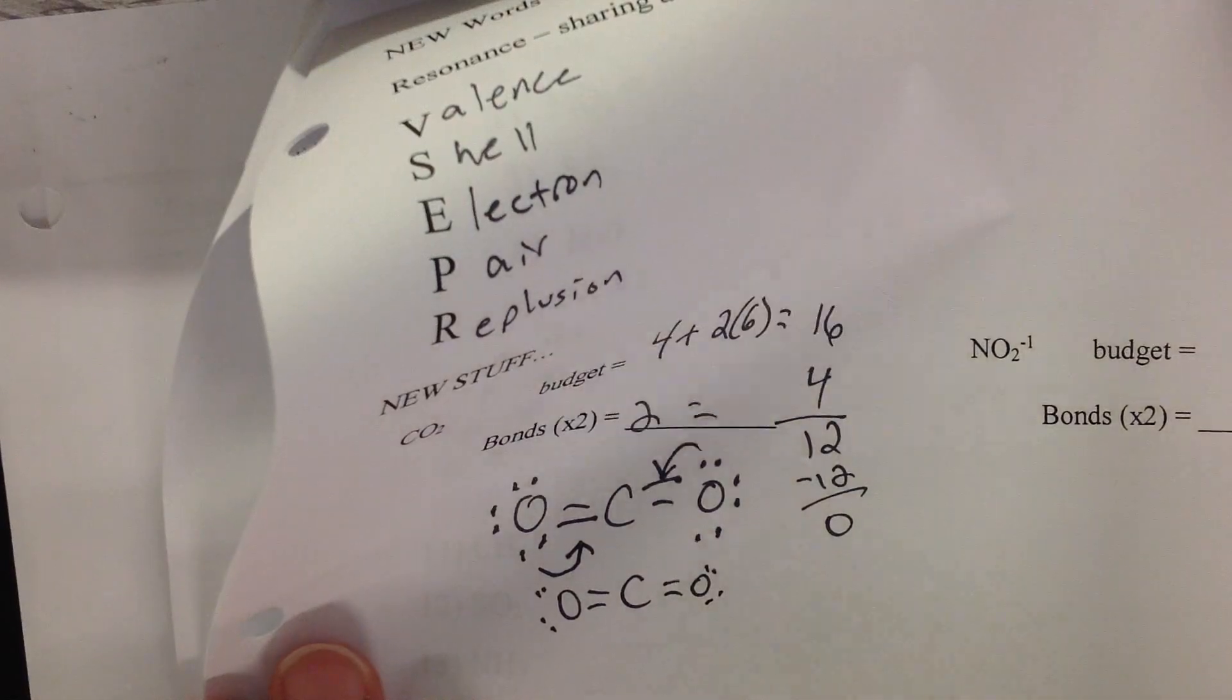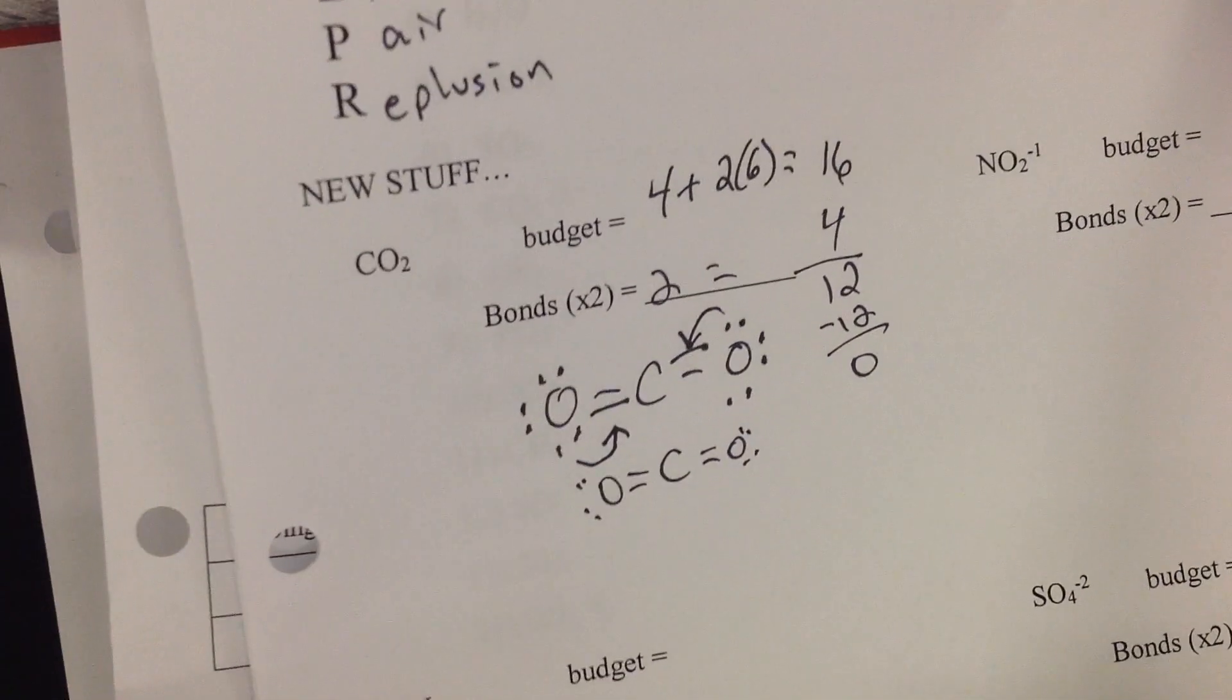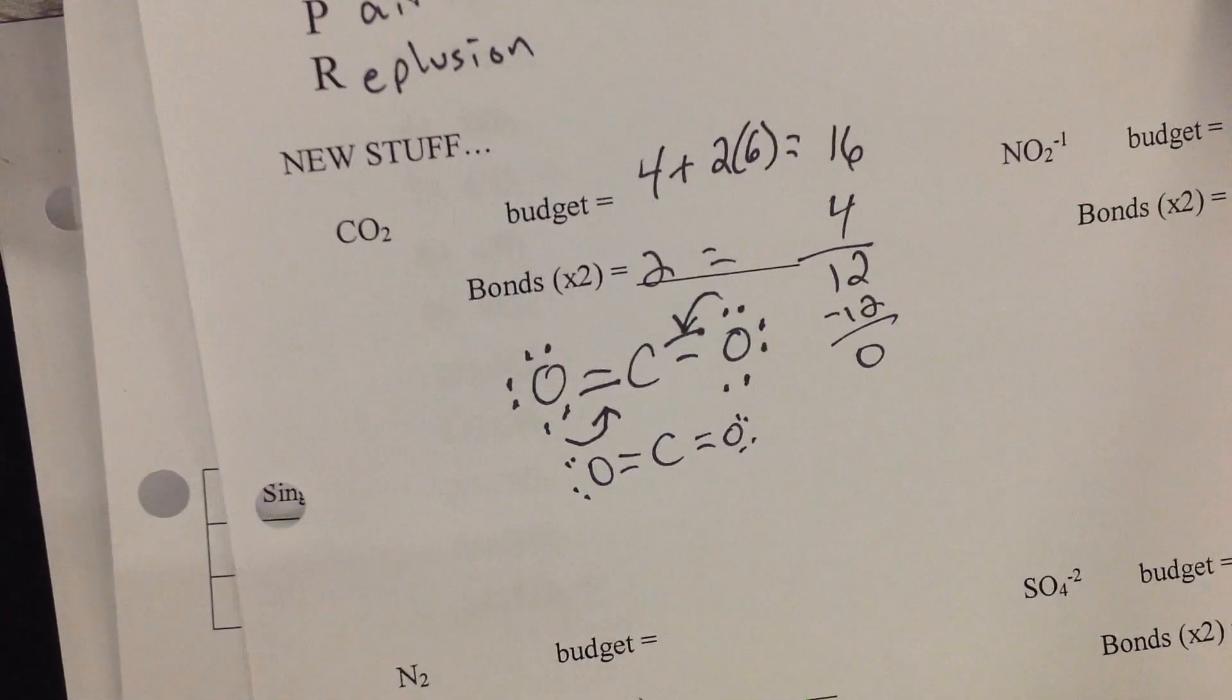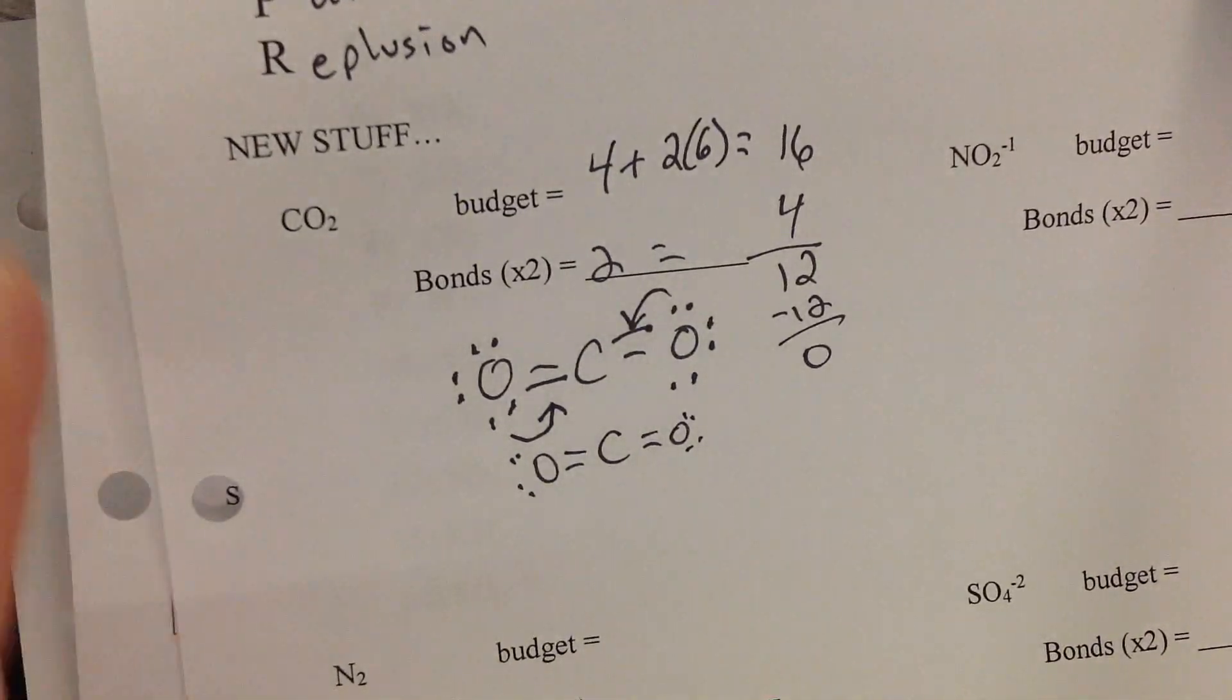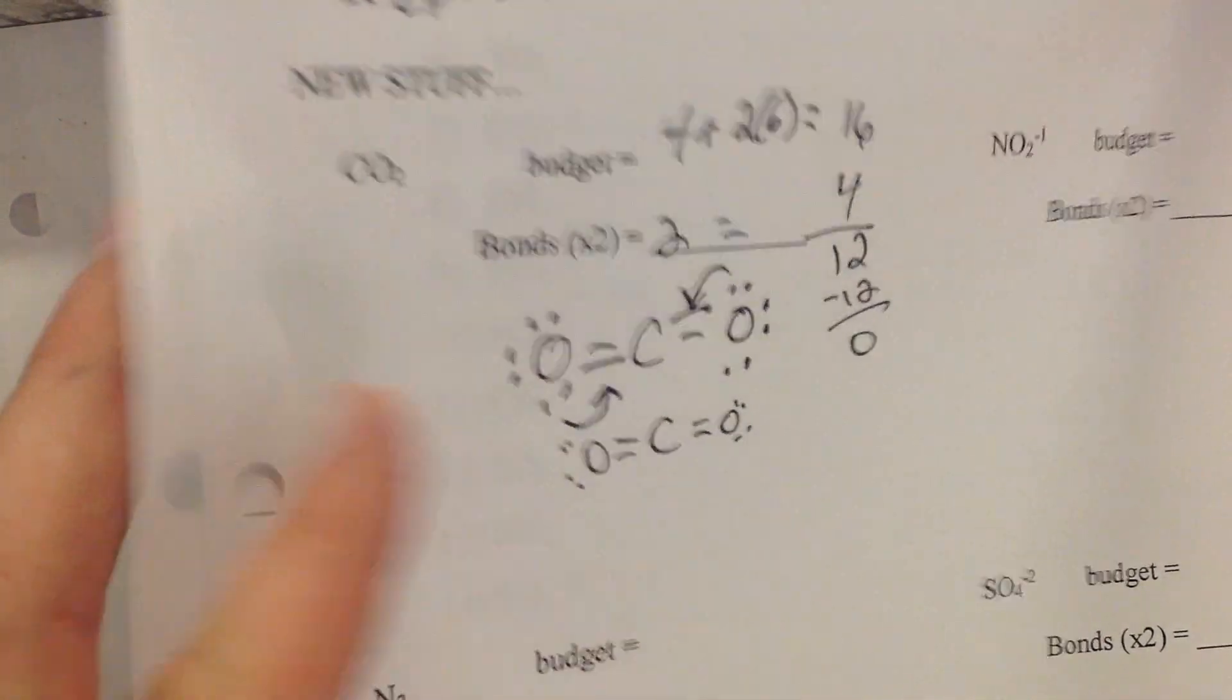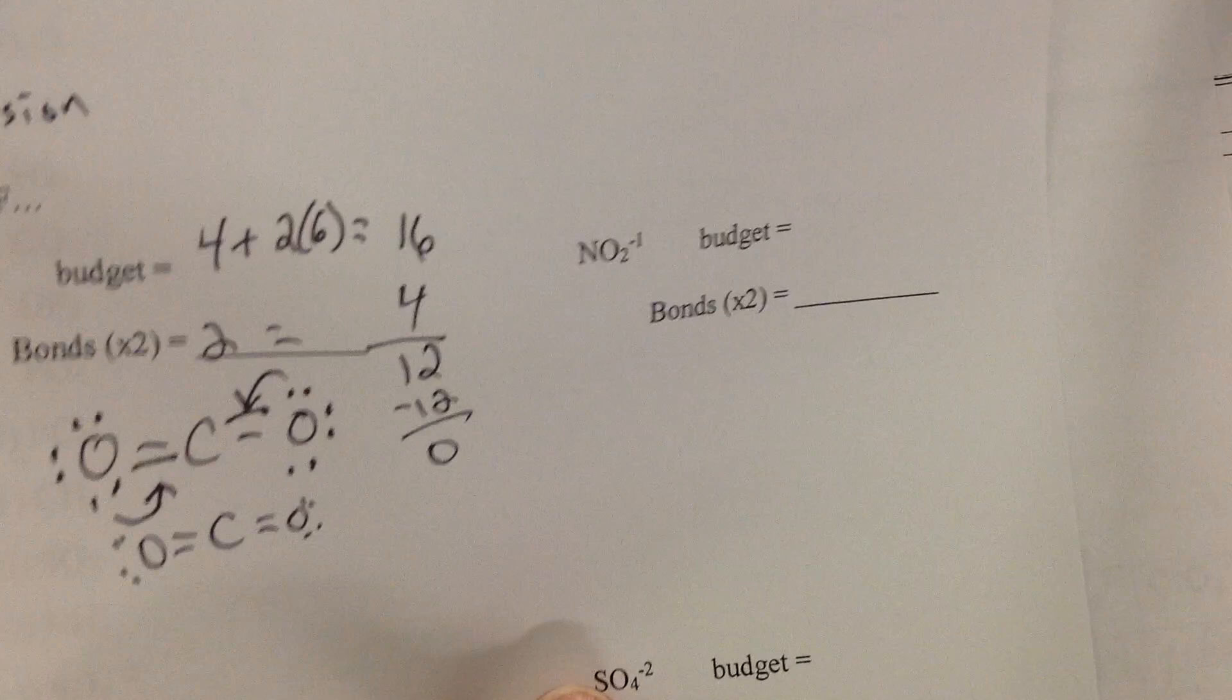So what's this final thing look like? And if I asked you what shape, what's the shape for that, you would say linear. 180 degree bond angle. Cool deal? So far this has been really easy. Let's try one a little bit harder.